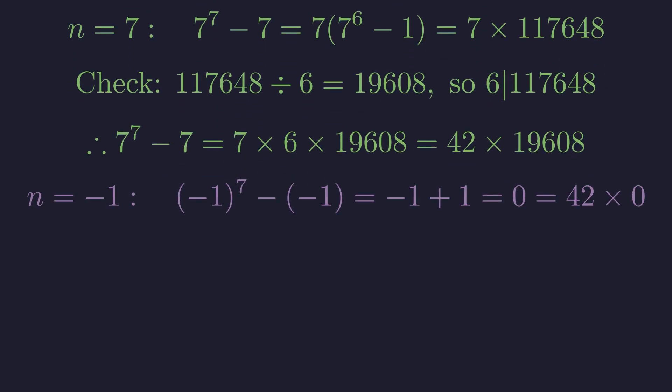Let's try a negative number. For n = -1, we get (-1)^7, which is -1, minus -1, which gives us 0. The pattern holds for negative numbers too.